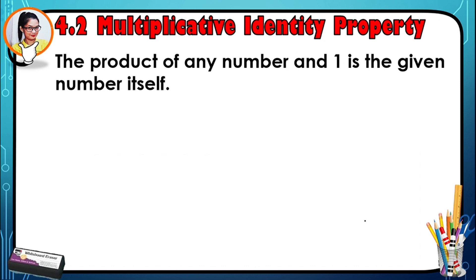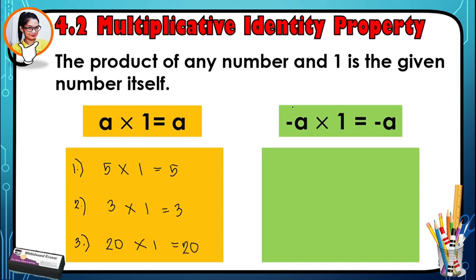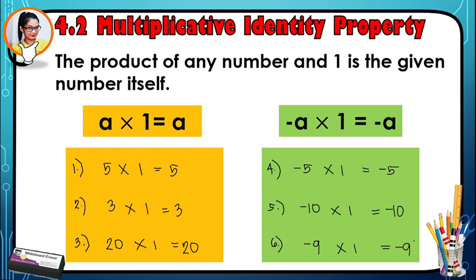Multiplicative identity property states that the product of any number and one is the given number itself. For example, a times one equals a. So five times one is five, three times one is three, and twenty times one is twenty. With negative numbers: negative eight times one is negative eight, negative five times one is negative five, negative ten times one is negative ten, and negative nine times one is negative nine.